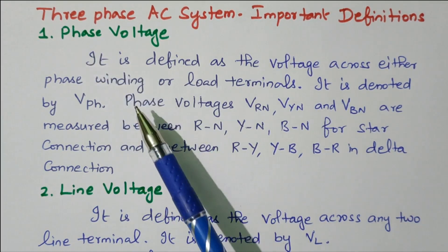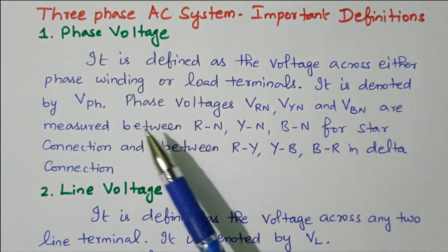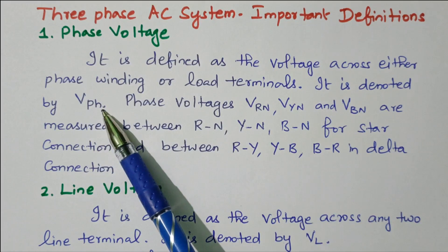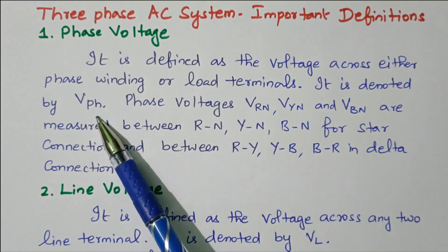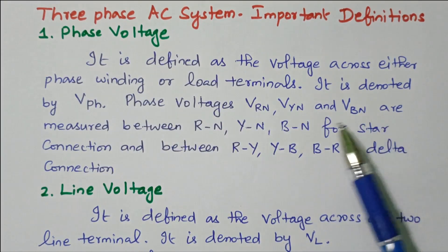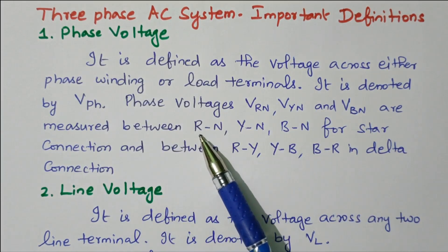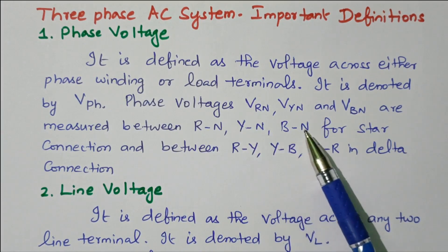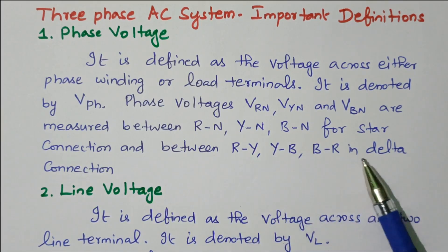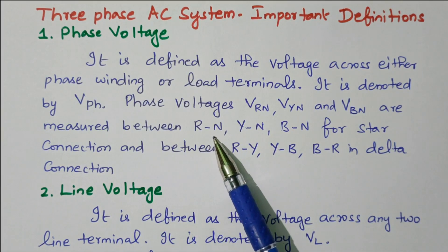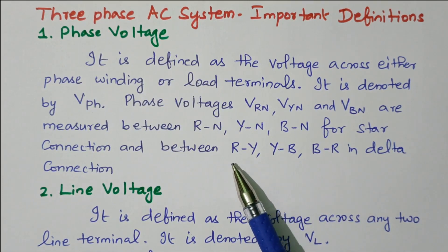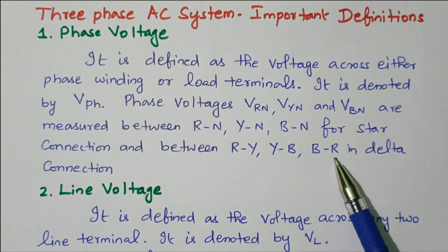Phase voltage is defined as the voltage across either phase winding or load terminals, denoted VPH. In star connection, phase voltages VRN, VYN, VBN are measured between each phase and neutral — R and N, Y and N, B and N — since only star connection has a neutral point. In delta connection, it is measured between RY, YB, and BR.